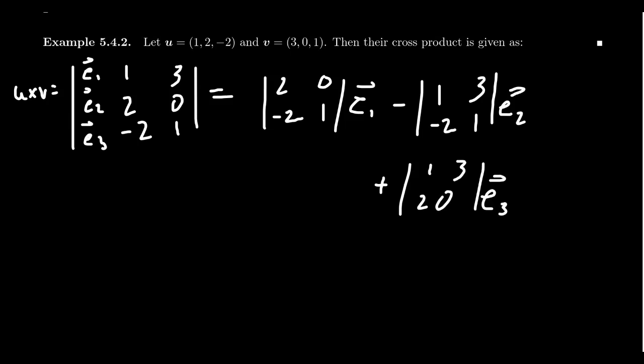If we calculate these 2×2 determinants: for the first one, you get (2)(1) - (0)(-2), which gives you 2 as your first entry. For the next one, you get 1(1) - (-6) which gives 7, but don't forget the negative sign in front there, so you actually get -7 for your second entry.